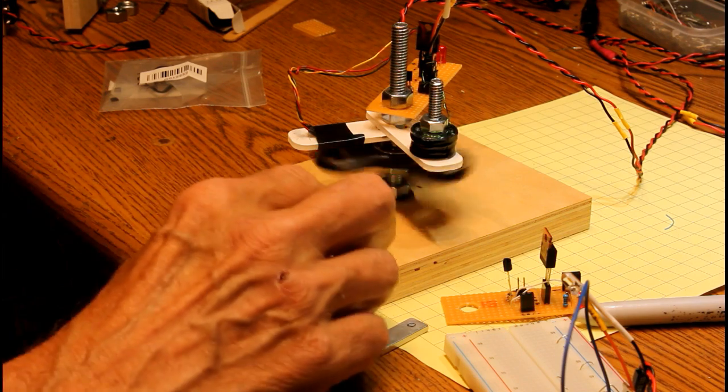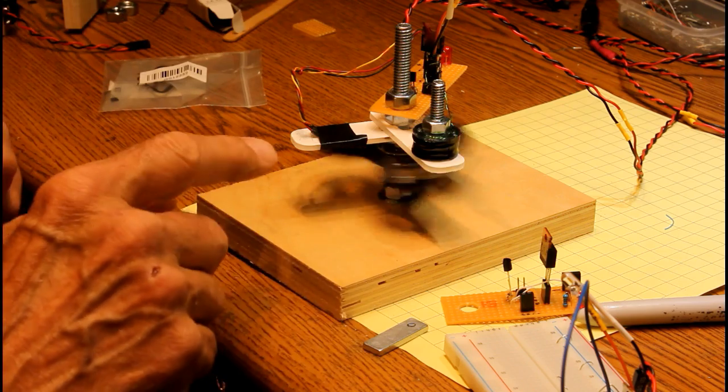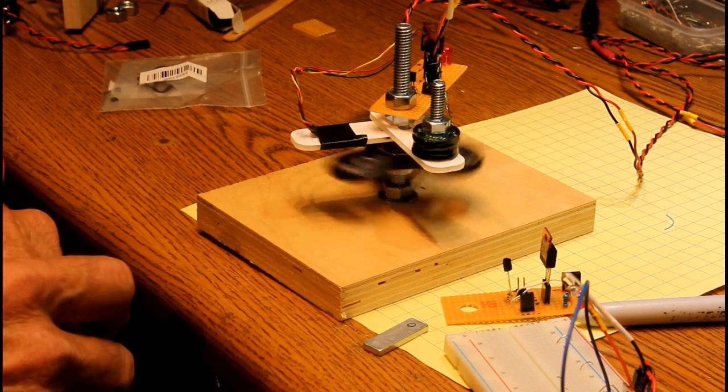Here we've got the fidget spinner brushless motor spinning rather nicely at a very low speed. It's probably doing maybe 100 RPM or something like that.